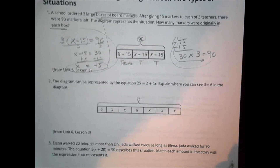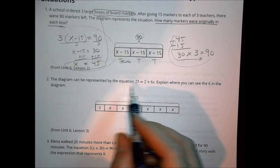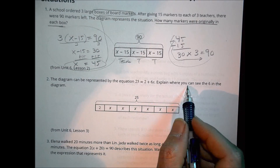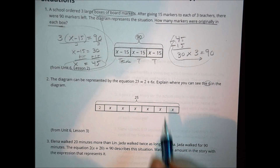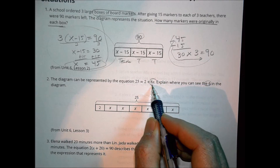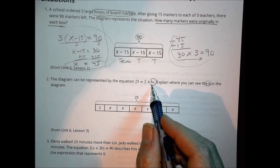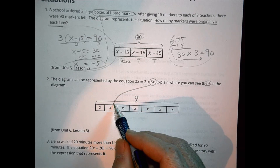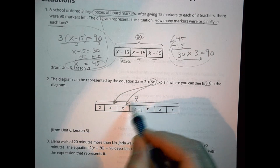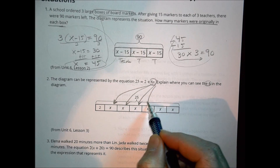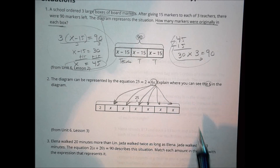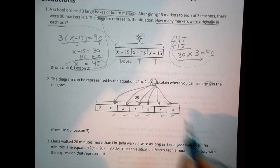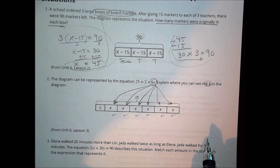Number 2: the diagram can be represented by the equation 25 equals 2 plus 6X. Explain where you can see the 6 in the diagram. The 6X is shown by the 6 different X's that appear in the tape diagram. The 6 comes from counting all 6 individual X segments, because X plus X plus X plus X plus X plus X gives 6X.